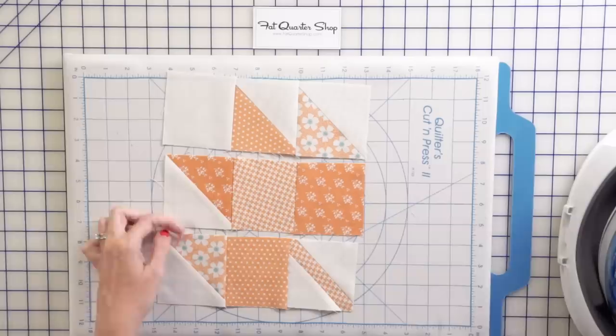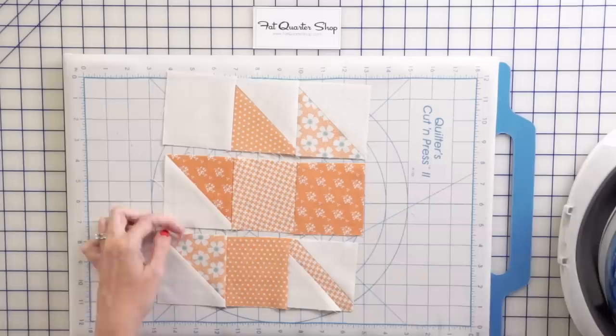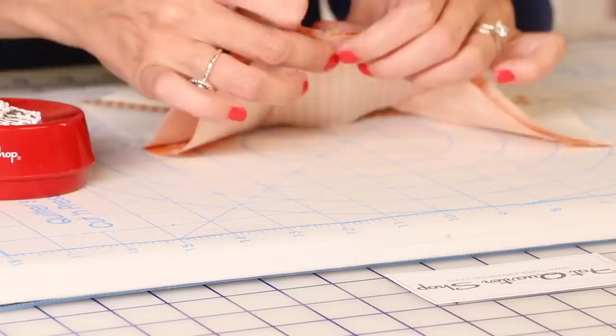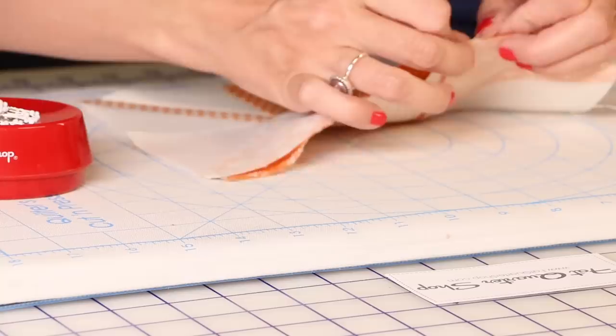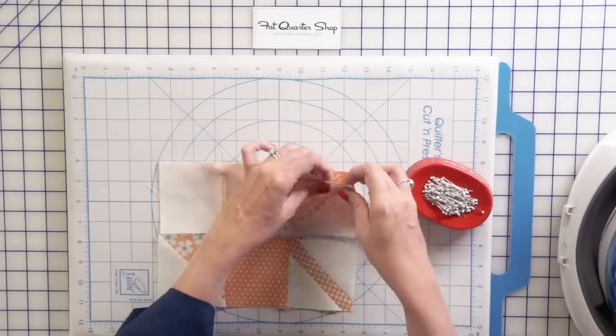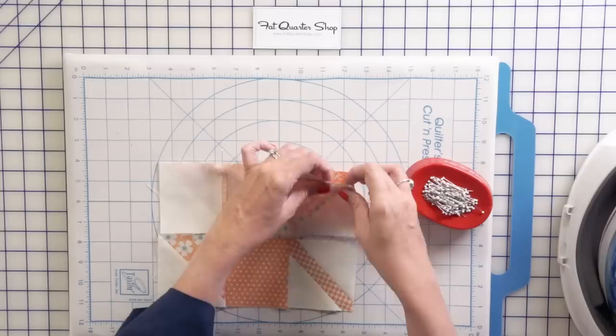Now the last thing to do is just to sew these two seams. And when I'm putting those together, the seams are going to nest and I will pin there and here. And I would also pin at the end. And I would just sew, stop, and then sew. And then you're going to have your beautiful maple leaf block.